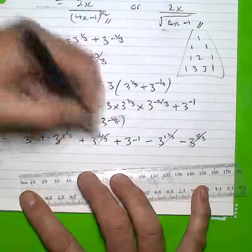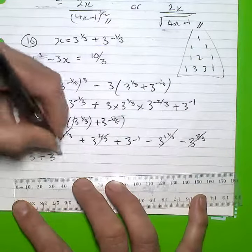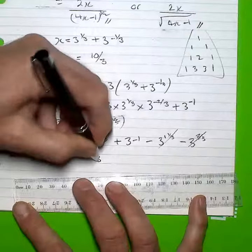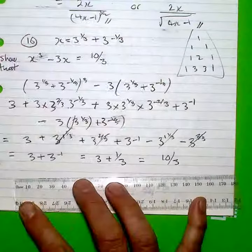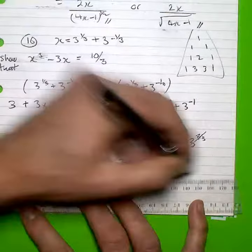Minus 3 to the 2 thirds in this instance. Cancel, cancel. I'm left with 3 plus 3 to the minus 1, which is the 10 over 3 that we're required to show.